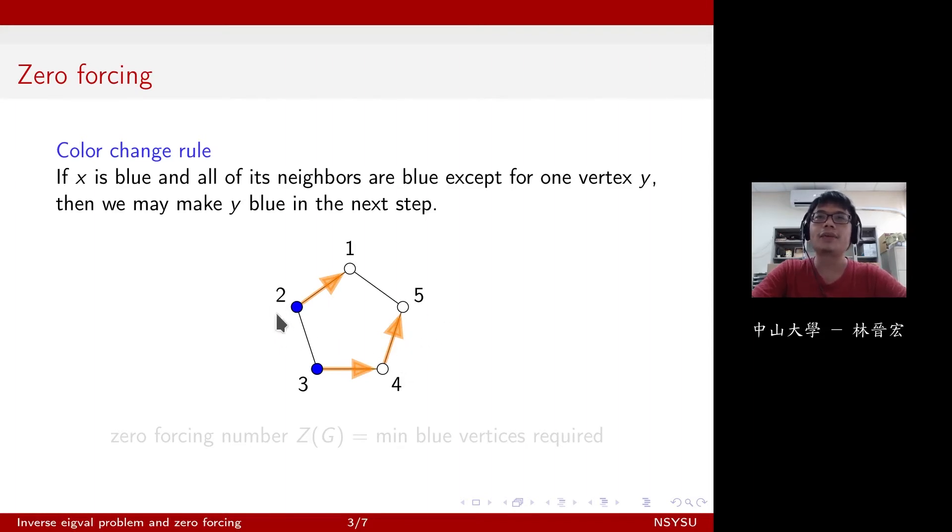So you will see that 2, 3 is a good choice, but 2, 4, or 2 itself is not a good choice. So zero forcing number, z of g, is trying to find the minimum number of blue vertices that is required at the beginning to make the whole graph blue.